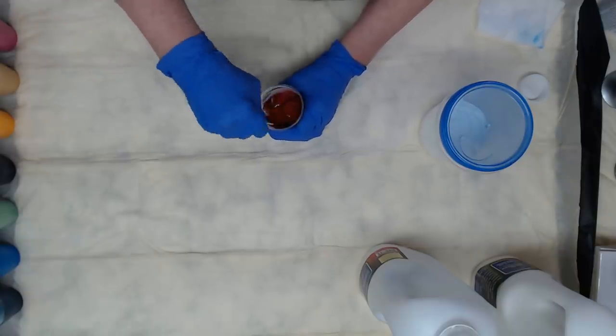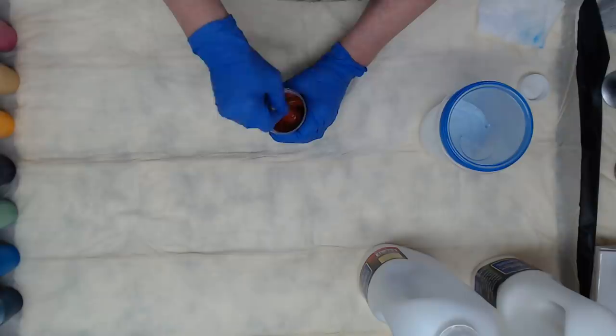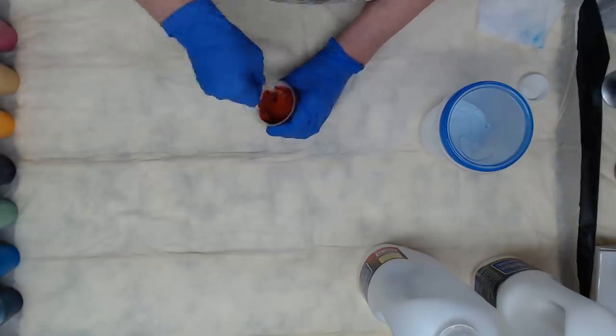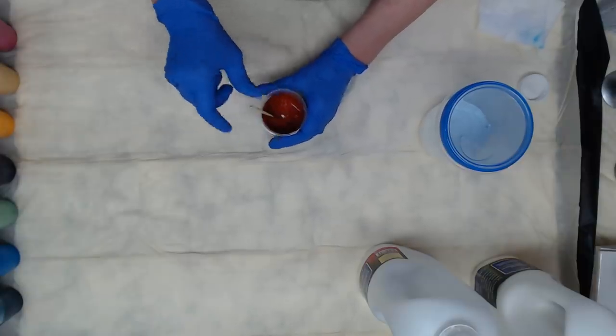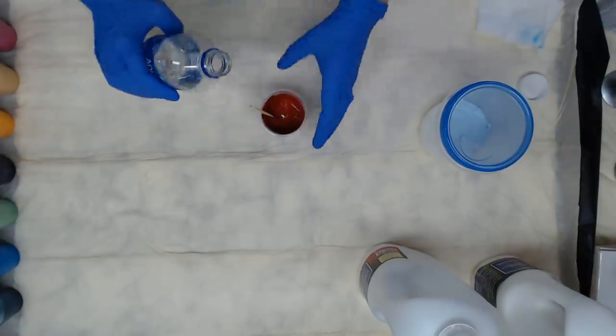You have to keep your paints thin enough. Floetrol will give you cells. You can use Floetrol if you like the cells. My Dutch pours I do not like a lot of cells. A couple here and there is fine but I don't want cells in those. So I use distilled water.